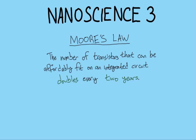This is a very important rule of thumb that has a lot of implications for computer science and also, of course, nanoscience, because that's what we're talking about. Note that this says affordably fit and not just fit if you spend a trillion dollars or something — it has to be within reason. You can't just go off on some weird crazy spending spree.